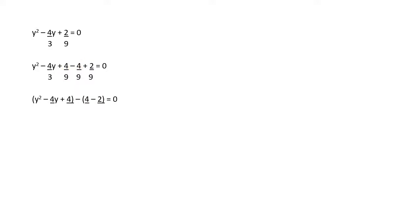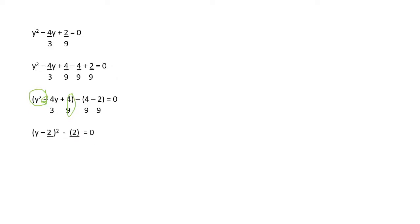We are going to form two groups: the first three terms in one bracket and the next two terms in another. There is a minus sign, so we are careful — the minus sign for 4 upon 9 carries over into the bracket. The 2 upon 9 has a plus sign, but when put inside the bracket this minus sign comes inside. Now we identify whose expansion the first bracket is: y squared minus 4 upon 3 y plus 4 upon 9. Checking the first and third terms: y squared is a square of y, and 4 upon 9 is a square of 2 upon 3.